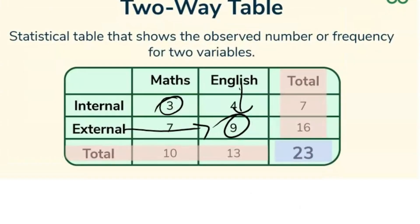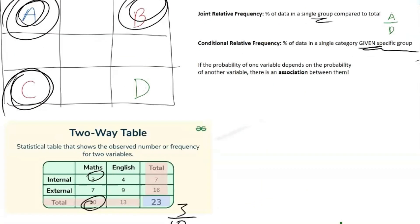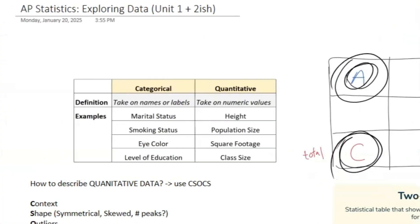And in our little two-way table, that's going to look like, let's say we're given that the student is in math. So that would be 10. So our total would be 10. And then we want to know what percentage of that is internal. Well, we have 3. So that would be 3 over 10 as an example for that part.